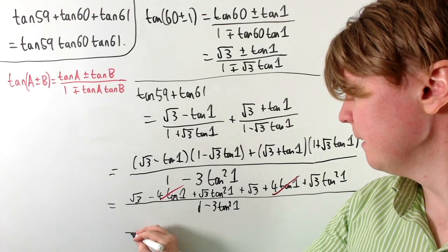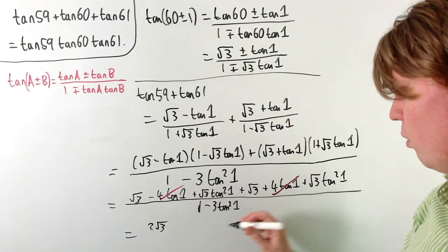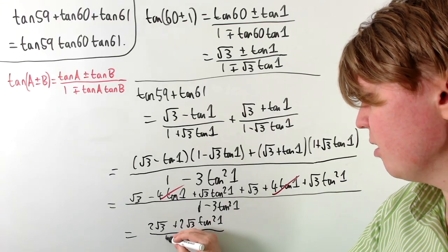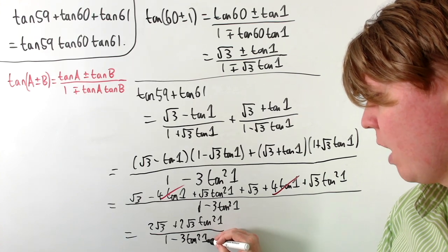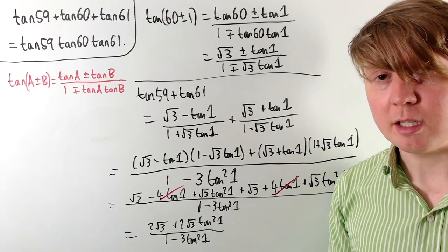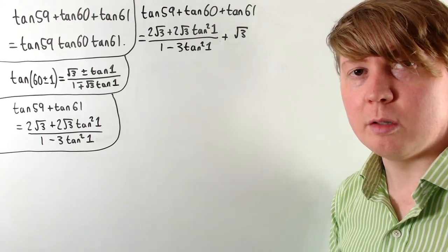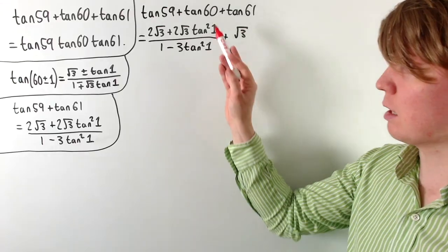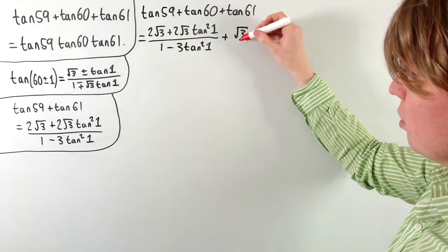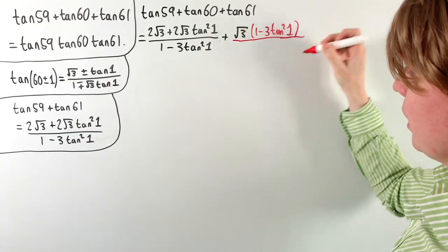Collecting like terms in the numerator gives us 2√3 + 2√3·tan²1, all divided by 1 − 3·tan²1. This is our expression for tan59 + tan61. Next we add tan60 = √3 to this, multiplying √3 by (1 − 3·tan²1) on top and bottom so the fractions share the same denominator.